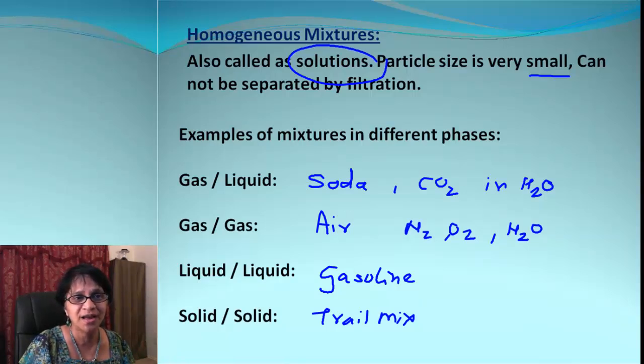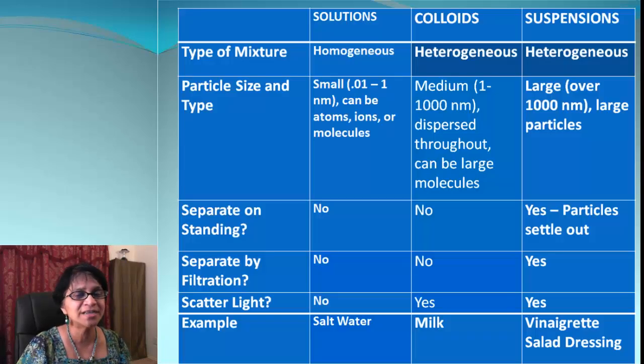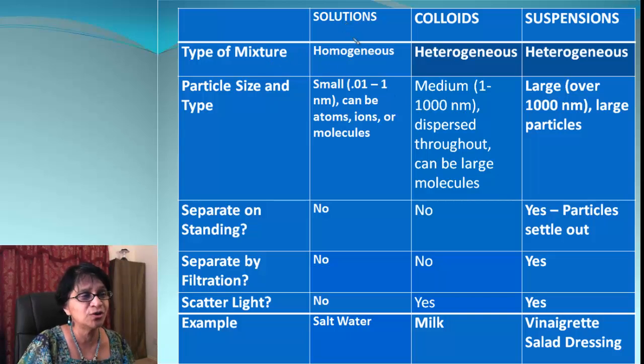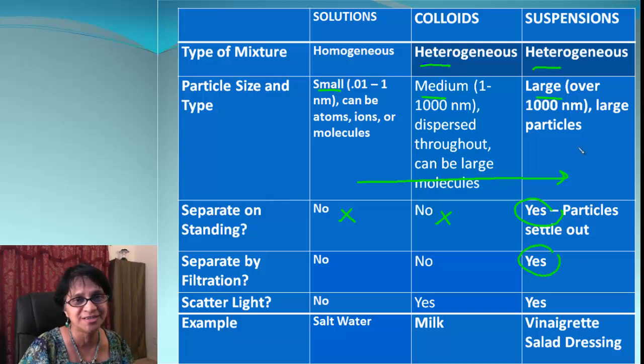Now what are the differences between a solution, a colloid, and a suspension? So in this chart, it's all summarized. Type of mixture: if it's a solution, it'll be homogeneous, whereas both colloid and suspensions are heterogeneous. Then we have particle size. It increases from solutions to suspensions. It is smallest, medium, and it is large as we go from solutions to suspension. What about separate on standing? That's only suspensions can do that. And both these we cannot separate by standing. Can we separate by filtration? Again, we can only separate suspensions by filtration, not the solution and not the colloid. What about light? Both colloids and suspensions can scatter the light. And what do we call that? That is called Tyndall effect. Whereas solutions will not scatter the light.